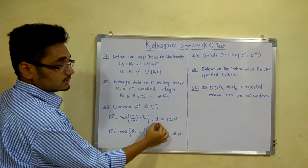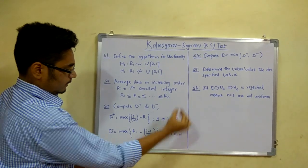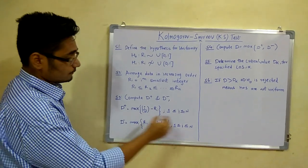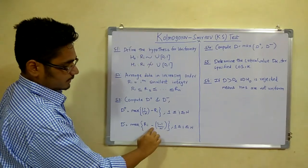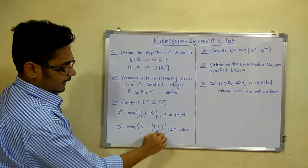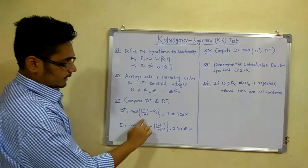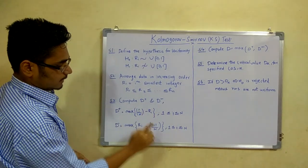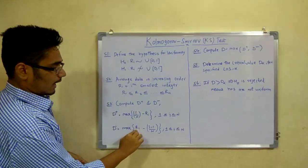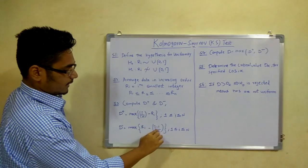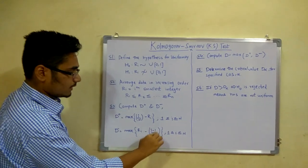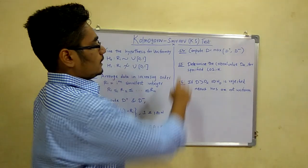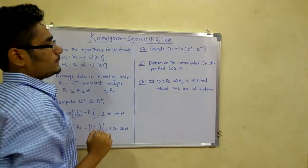The index i lies in the range from 1 to n. Similarly, for D-, you calculate the maximum of (Ri - (i-1)/n). Care should be taken not to reverse the order: for D+ it is i/n - Ri, not Ri - i/n. For D- it is Ri - (i-1)/n, and i also lies in the range 1 to n.